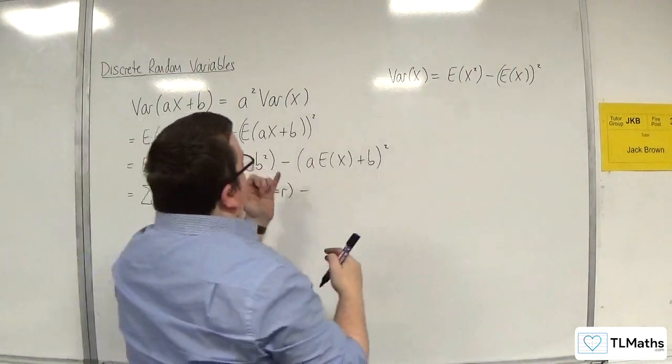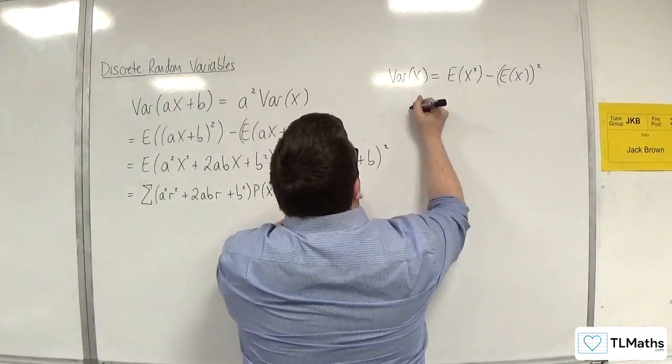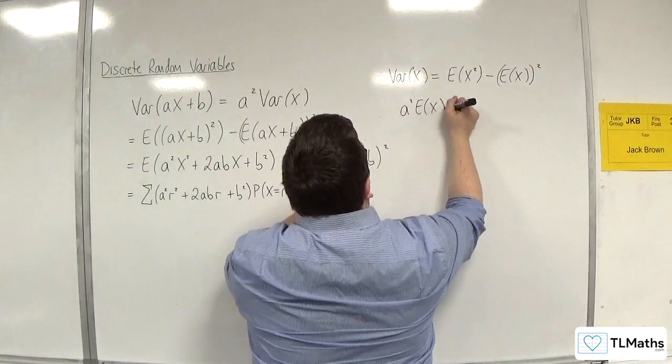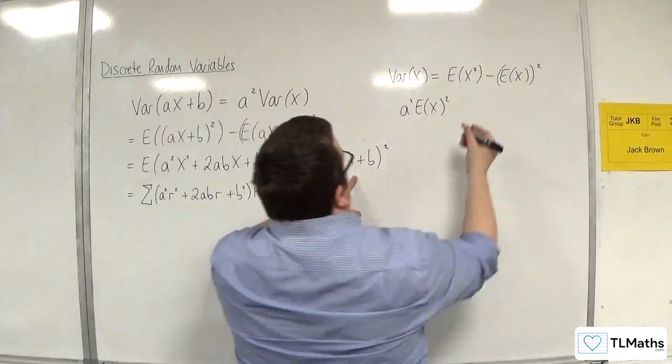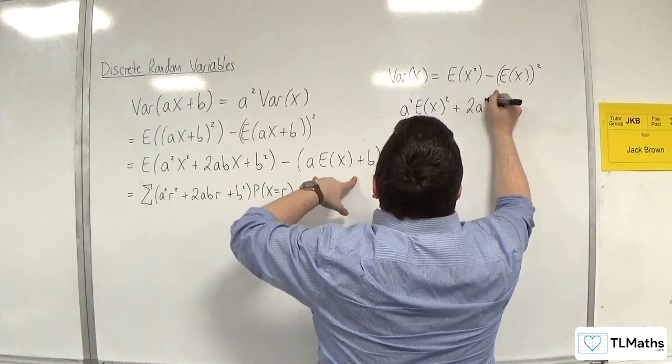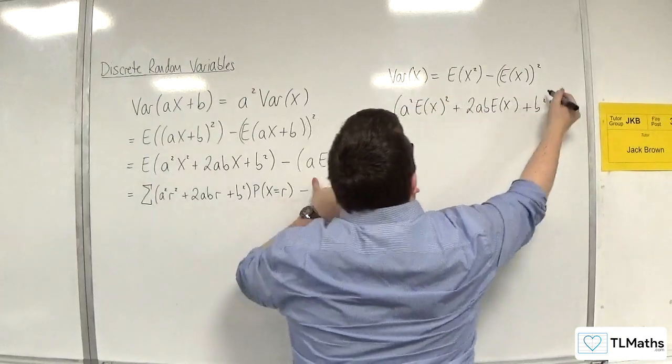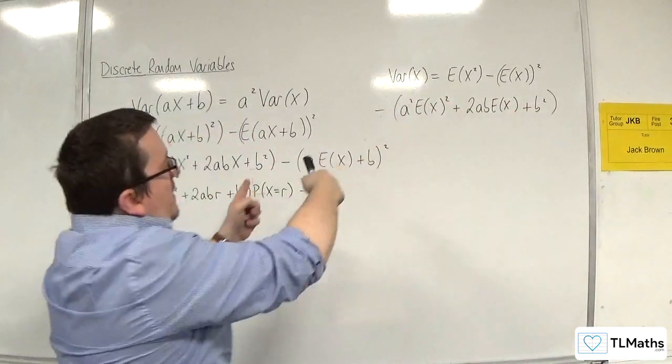Now I'll expand this bit out. So here you would have a squared e of x all squared plus 2ab e of x plus b squared. Now we're subtracting that. So that's that bit there.